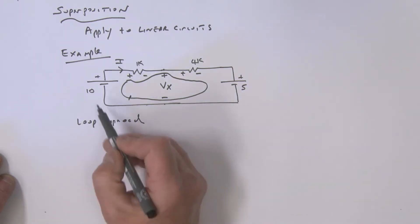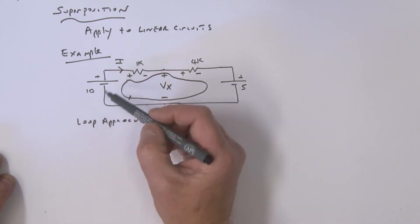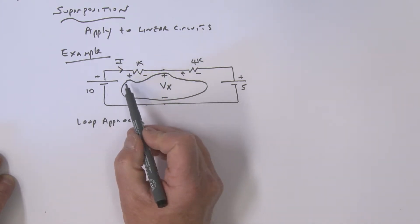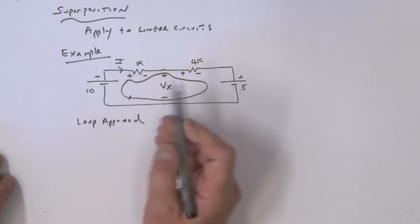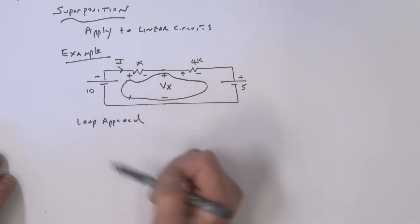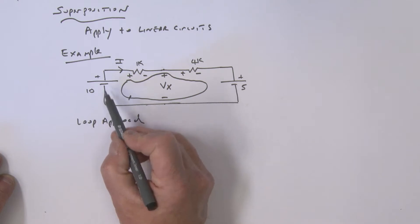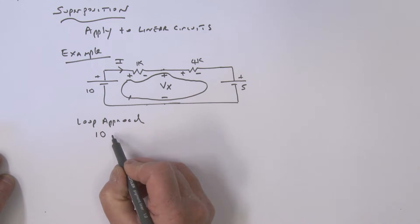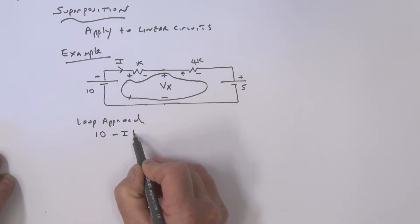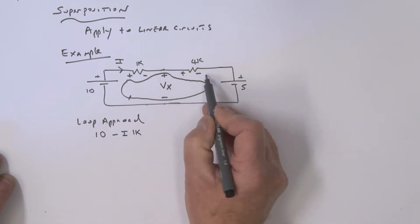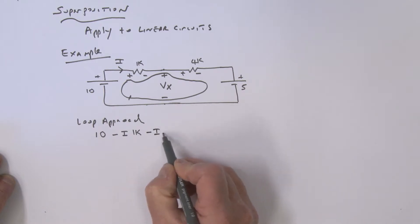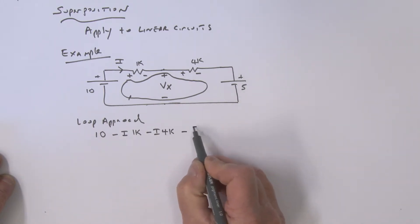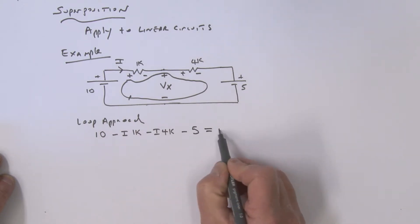We're going to take this loop and sum those voltages. Starting here, using the convention that going up in voltage is positive and a drop is negative: from minus to plus, that's +10. Dropping across the 1kΩ, that's −i×1k. Dropping across the 4kΩ, that's −i×4k. Then a drop across the 5V source, that's −5. All of that equals zero.